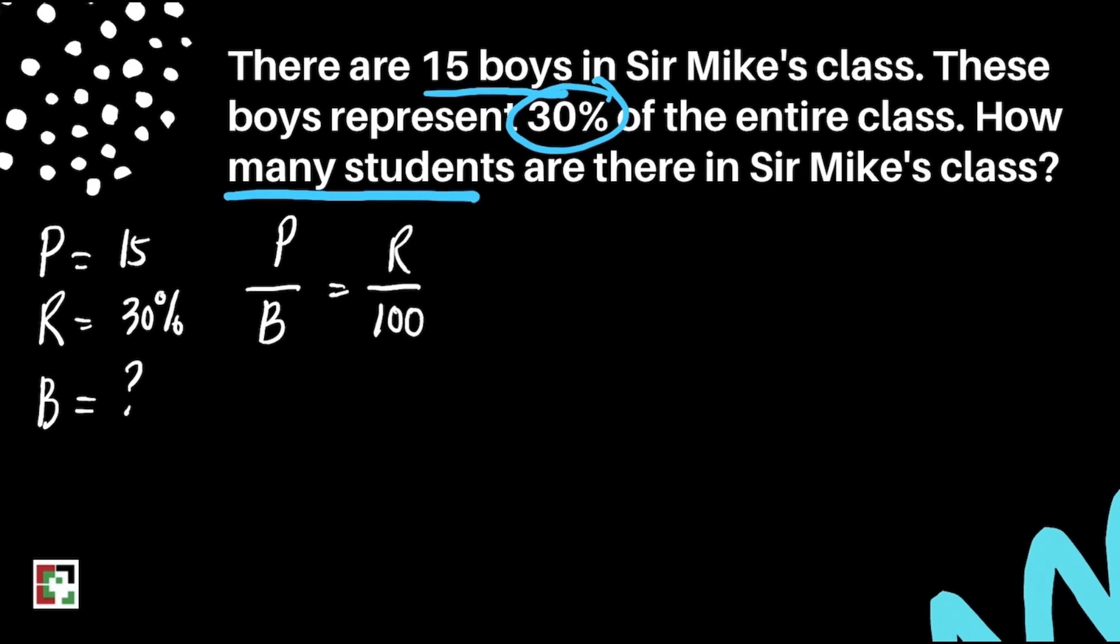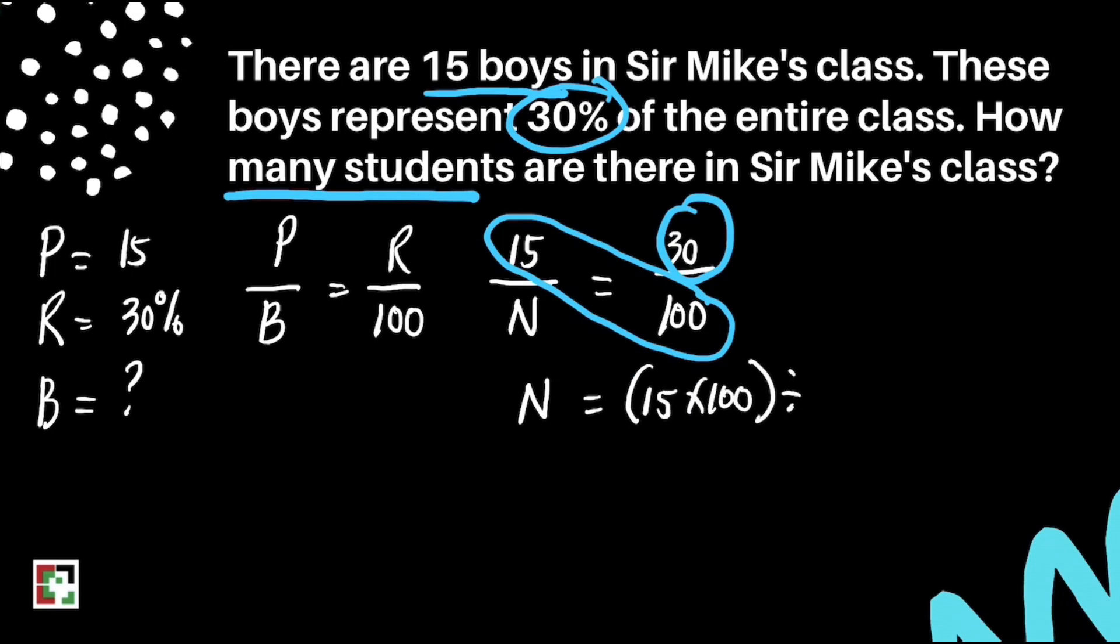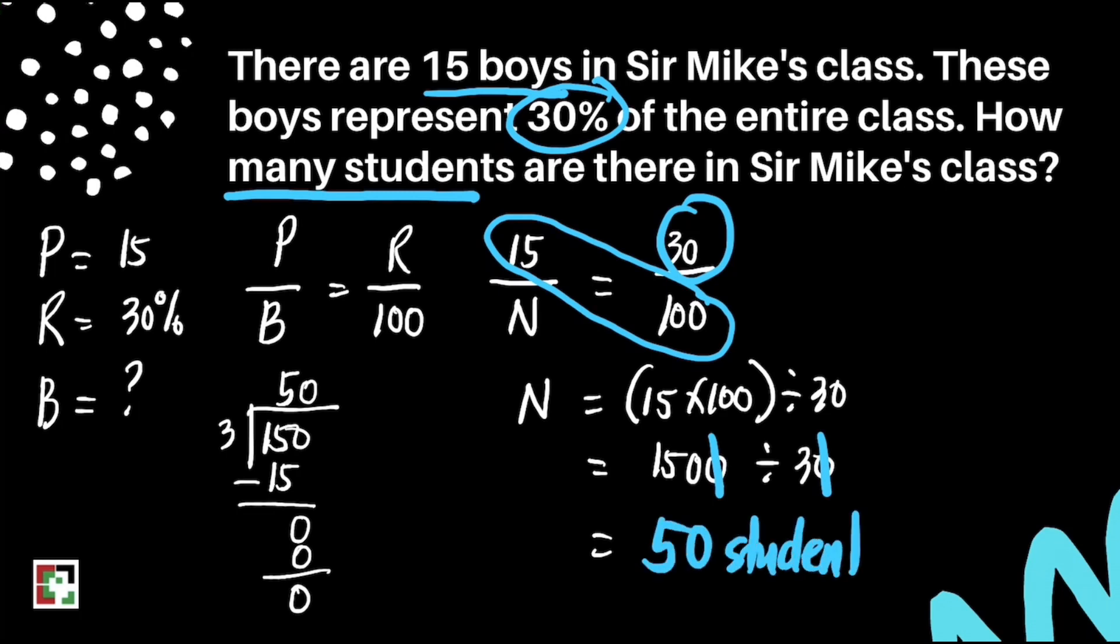We'll still use the same formula. Let's substitute. We have 15 over N equals 30 over 100. How to get the value of N? Again, just do cross multiplication. That's 15 times 100 divided by 30. That is 1,500 divided by 30. We can cancel the two zeros. That's 150 divided by 3. We'll get 50. It means there are 50 students in Sir Mike's class. That's our final answer.